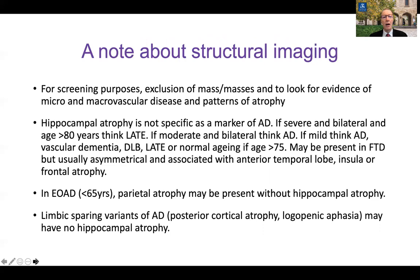A quick note about structural imaging before we get on to PET — so CT or MRI. For screening we do structural imaging to exclude masses and look for reversible conditions such as subdural hematomas. We also look for evidence of micro and macro vascular disease and patterns of atrophy that may help with a more specific diagnosis. However, atrophy or neurodegeneration occurs relatively late when symptoms are well established, so MRI is not useful for earlier diagnosis but may give clues to the likely etiology in established disease.